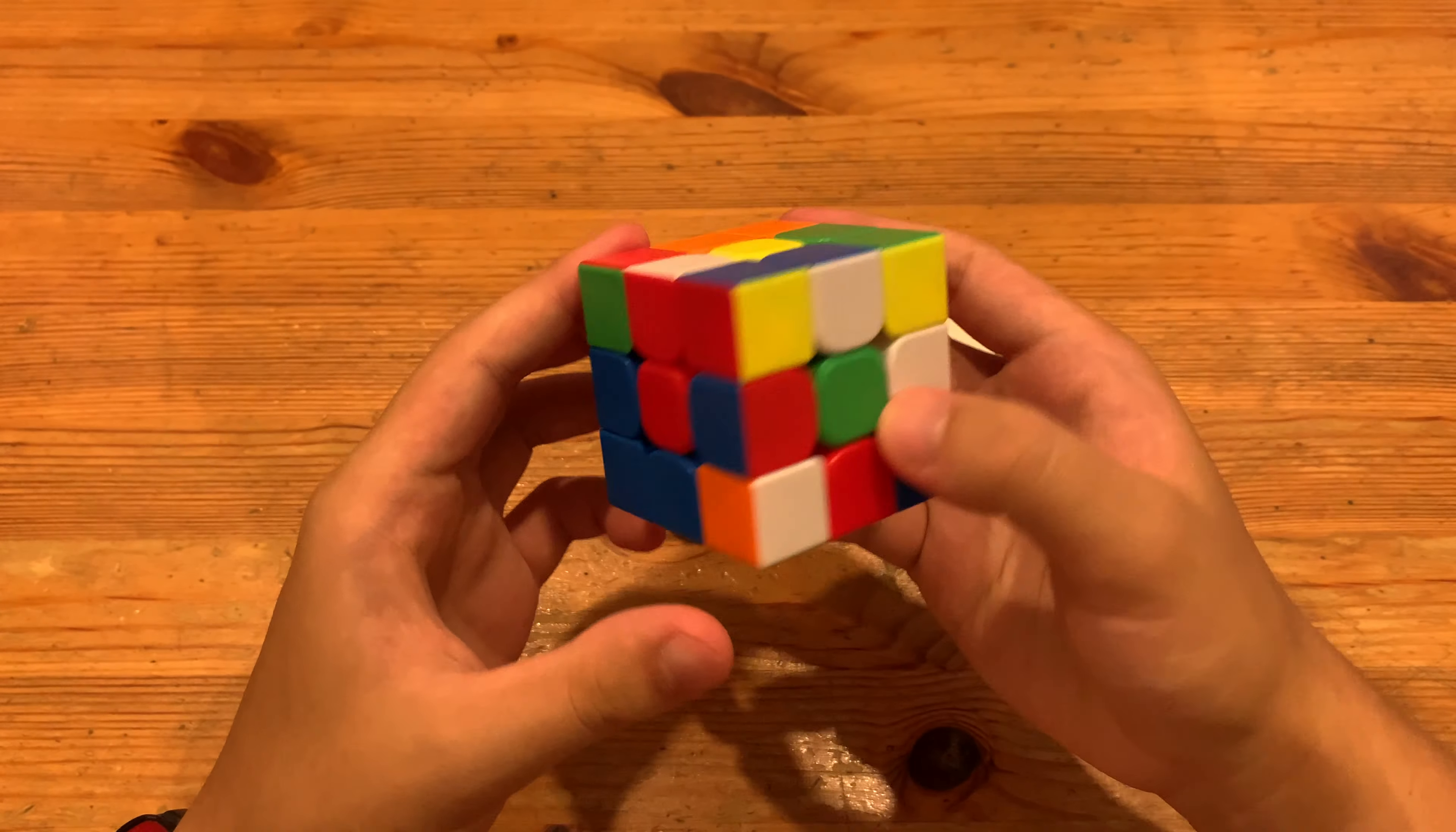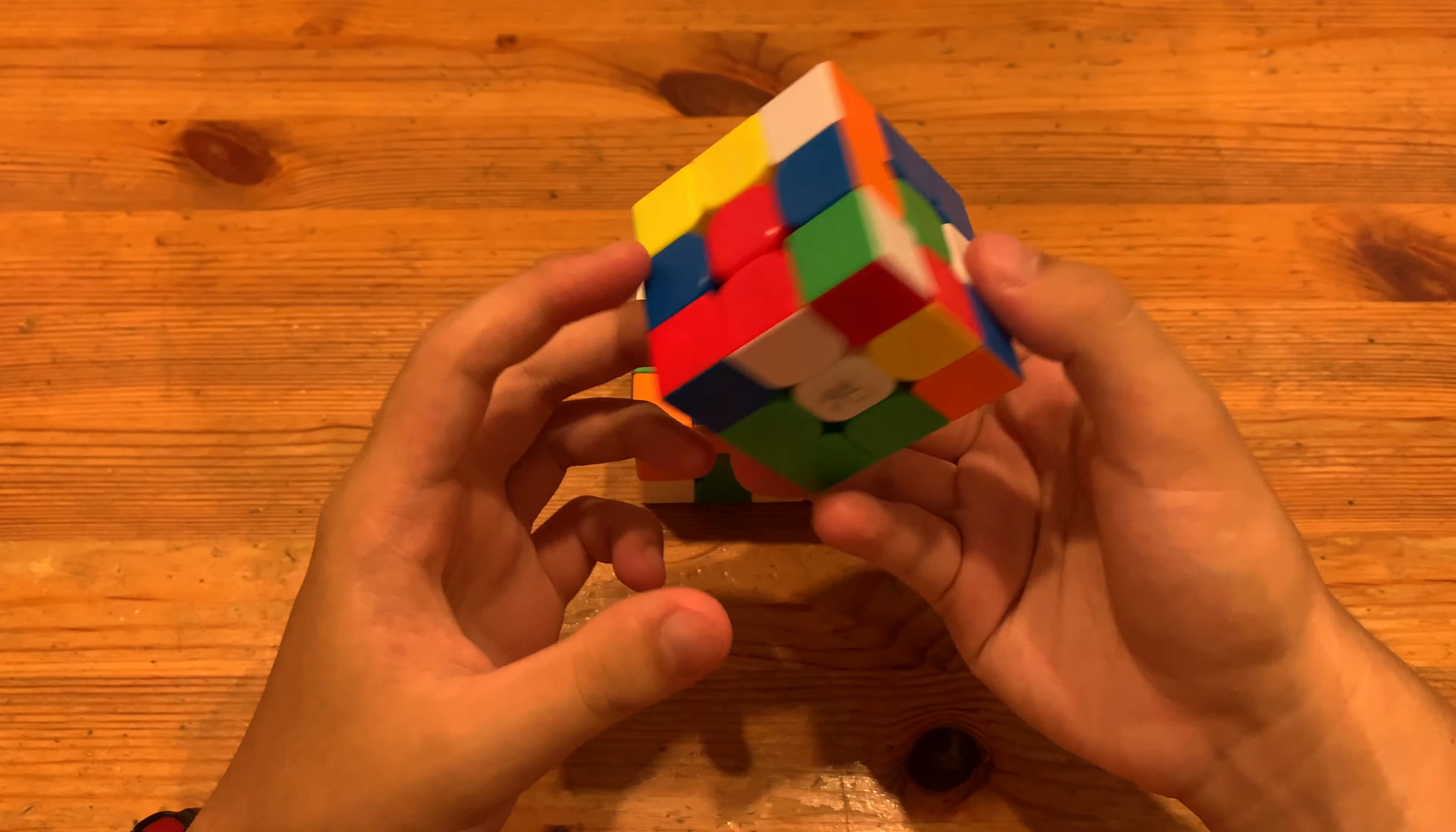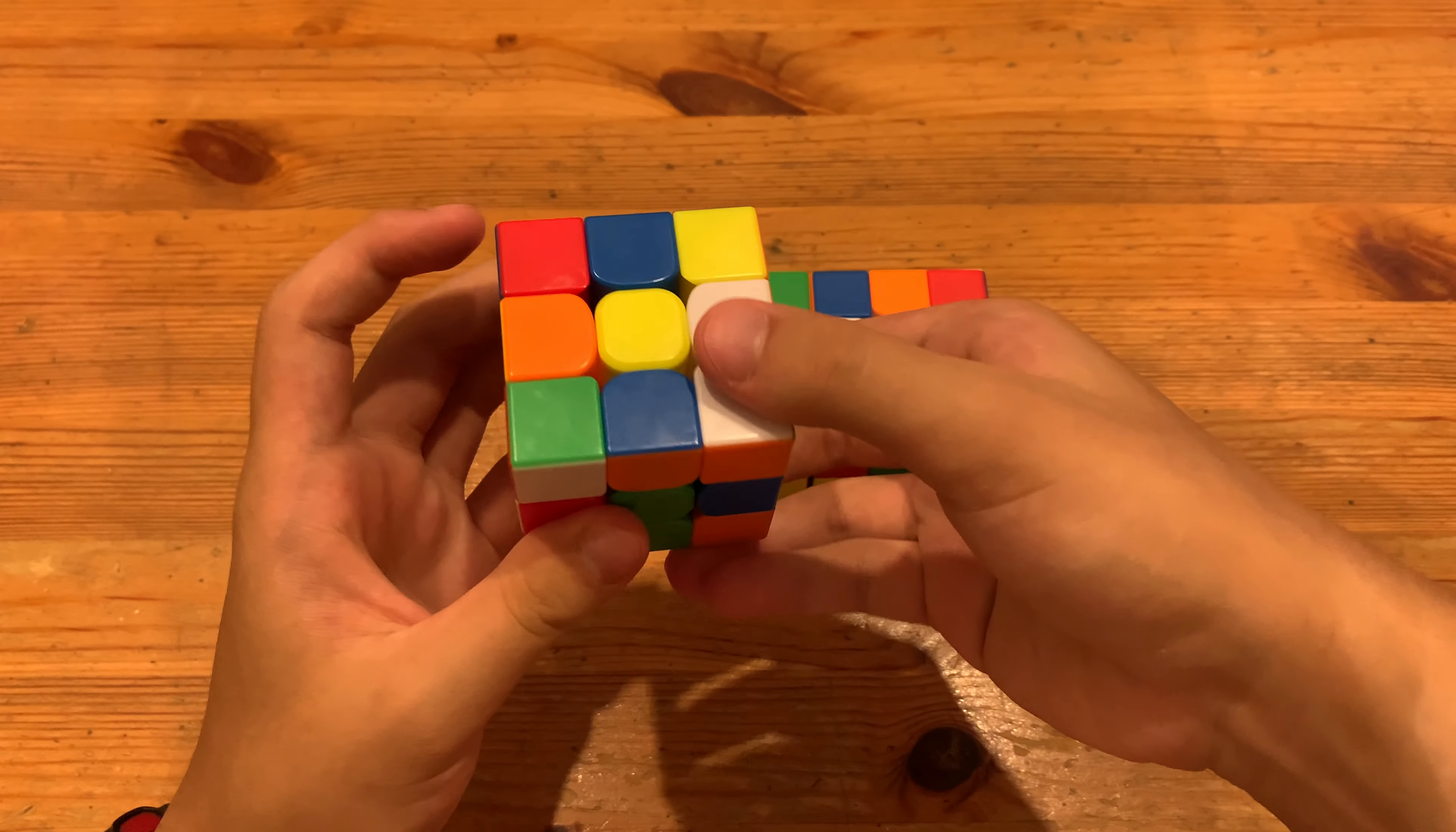So for the first solve, what I can do here is I'll probably just solve the back left pair. To do that I'll do L2' to enter this cross edge and here I'll do U' to move this over and then R and then these two moves at the same time and then R2.